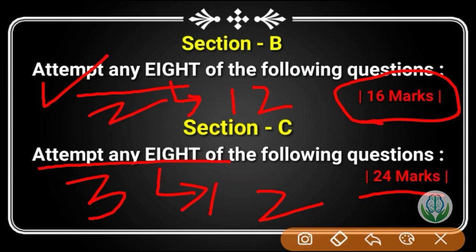Section C is 24 marks with 8 questions, each question is 3 marks. Section C questions also come from the exercise, so you have to do the exercise and learn the chapter to solve the paper.